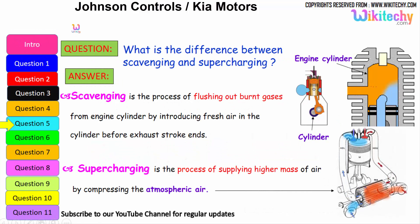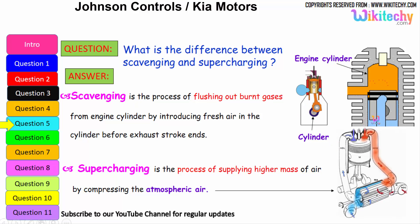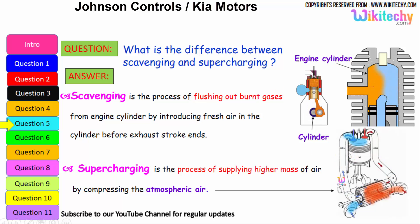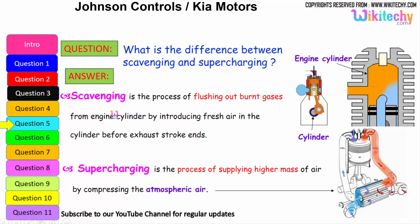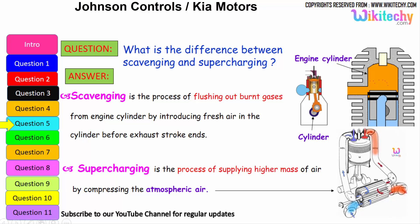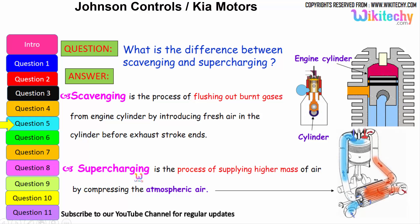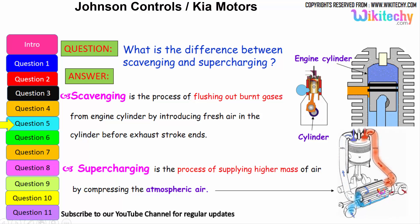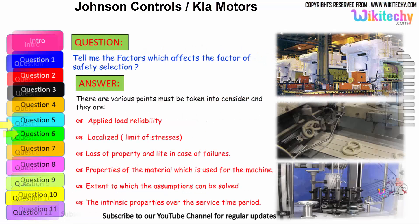Let us move on to the next question: what is the difference between scavenging and supercharging? Scavenging is the process of flushing out the burnt gases from the engine cylinder by introducing fresh air into the cylinder before the exhaust stroke ends. Supercharging is the process of supplying high-pressure air by compressing atmospheric air and injecting it into the cylinder.